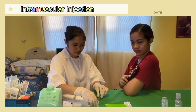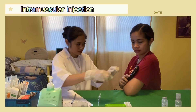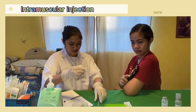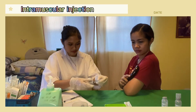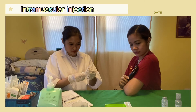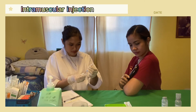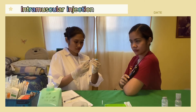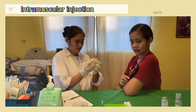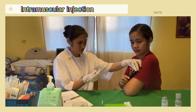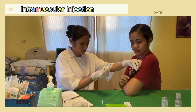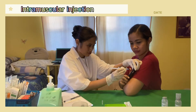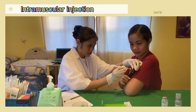Now inspect the skin for bruises, inflammation, edema, masses, tenderness, and sites of previous injection. Then uncap the needle using the non-dominant hand. You may hold the syringe between the thumb and forefinger of the dominant hand like a dart.